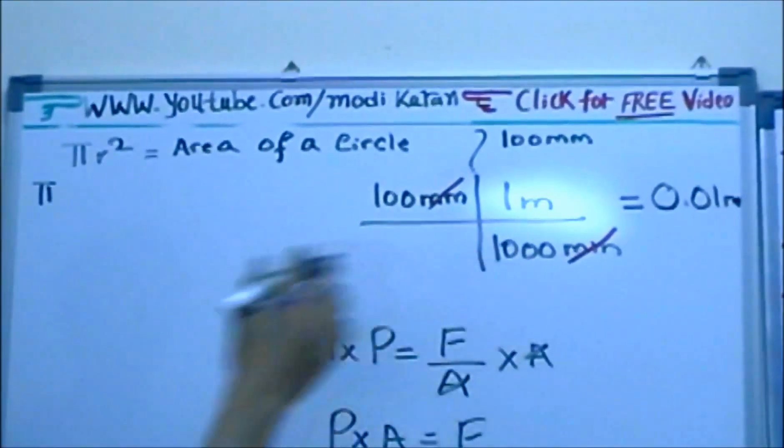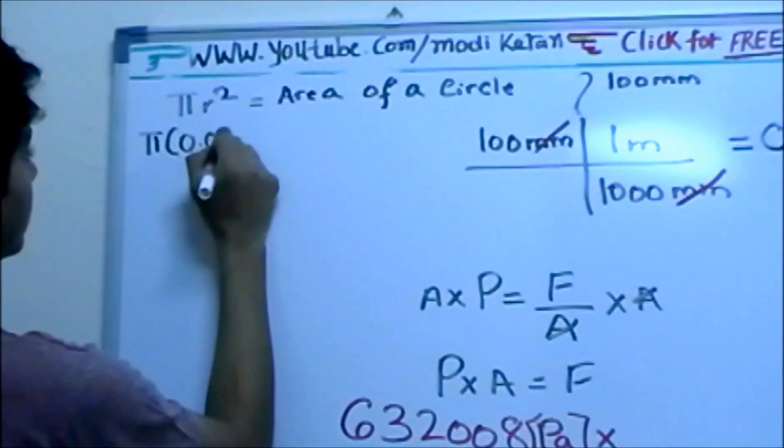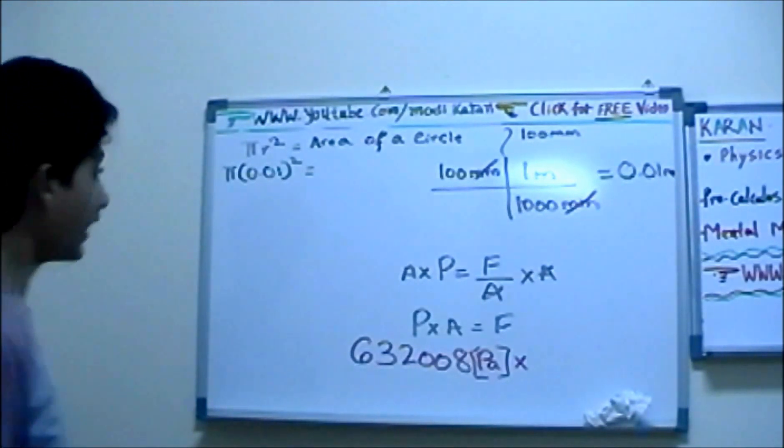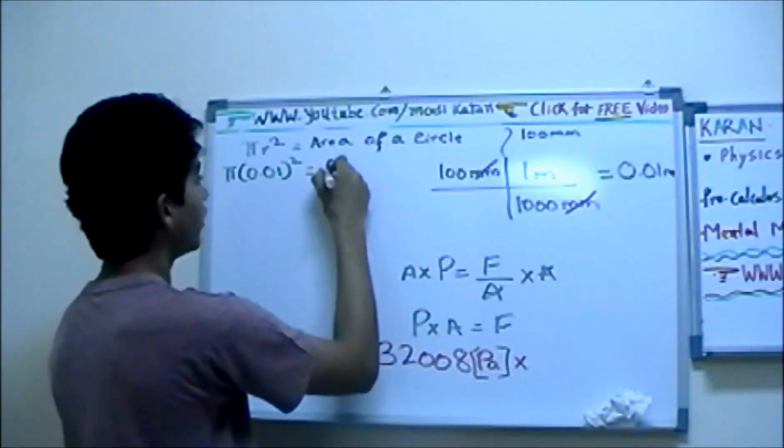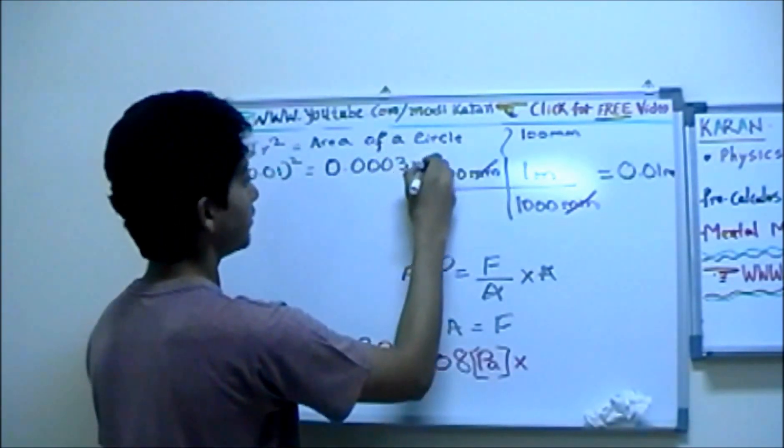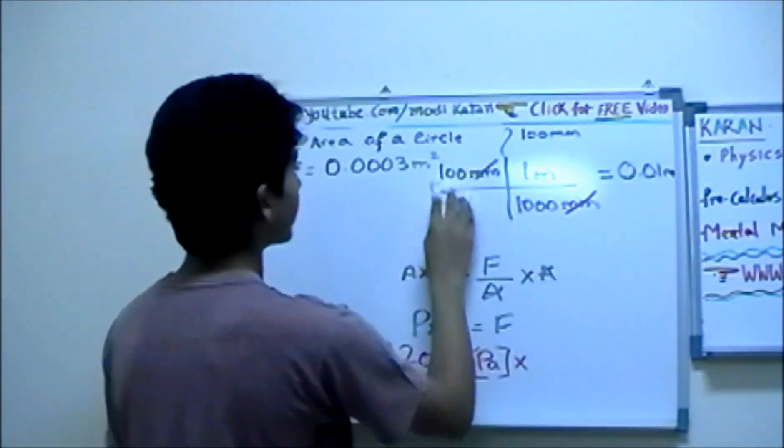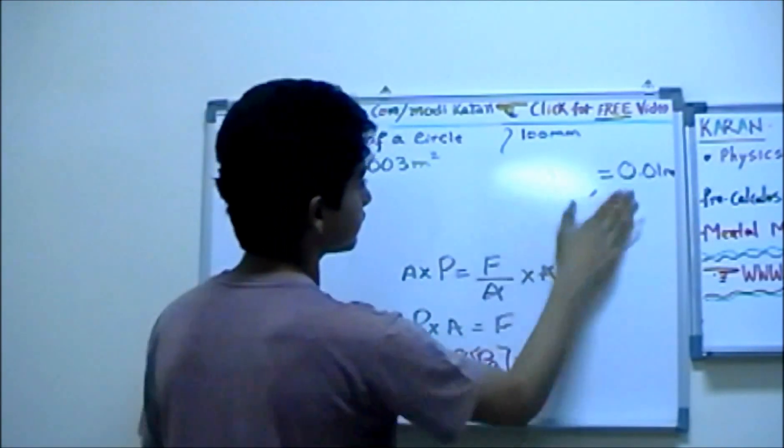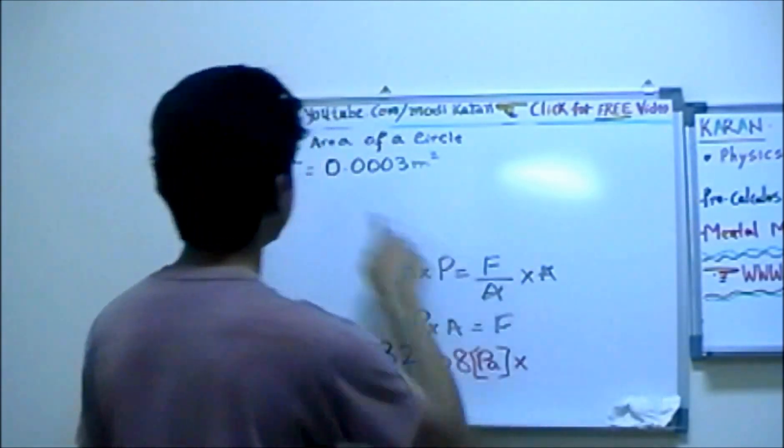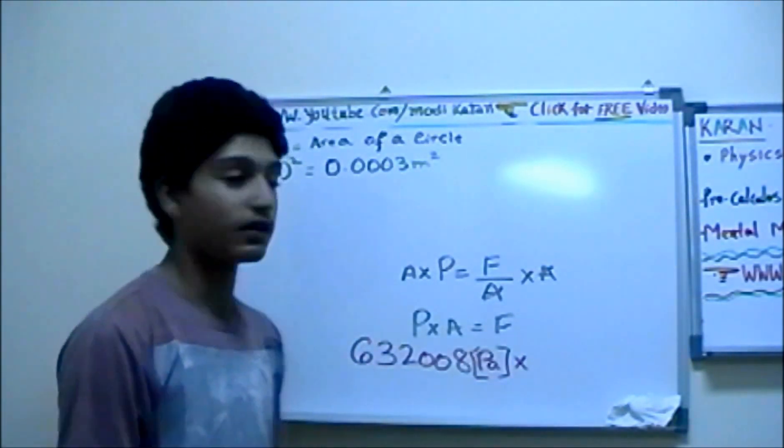Now, we got the radius. So, we simply do 0.01, that is squared. Now, if you do that, you basically get your answer to be in 0.0003, and that is in meters. So, meters squared, since the area is always being squared. Now, let's go ahead, and since we found the area. And this is, basically, the area of circle. So, we got the area of the leakage.